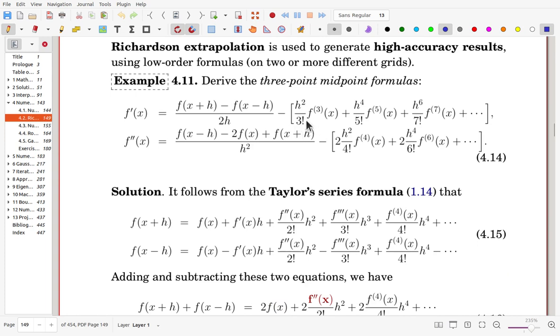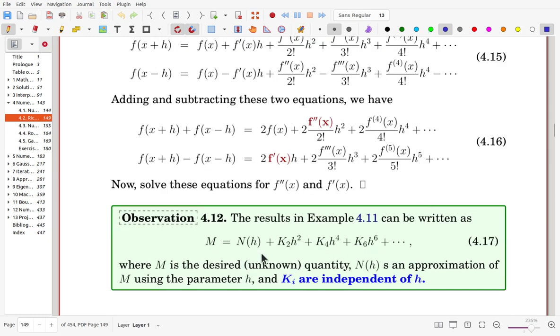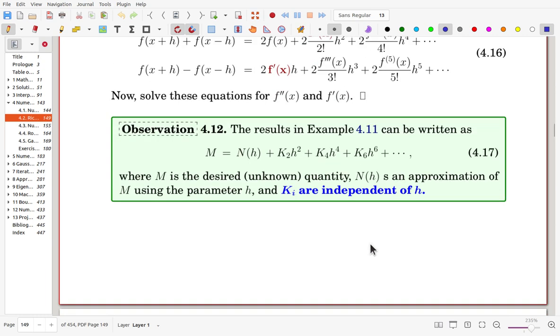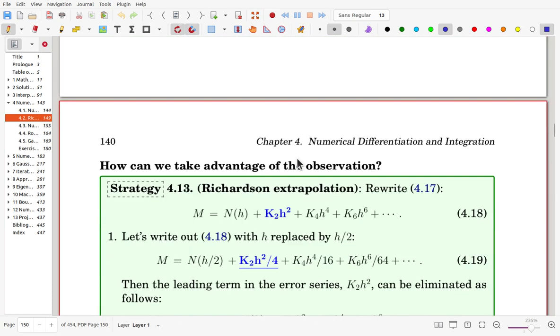We may consider here 3 factorial on the bottom and f third derivative at x, and also here 5 factorial and here f fifth derivative at x. We can consider these portions as constants. So we can write in this form. This is observation.